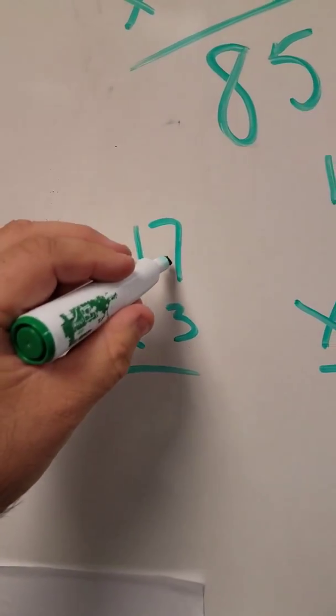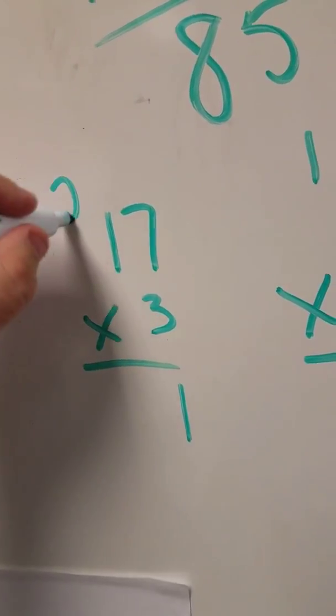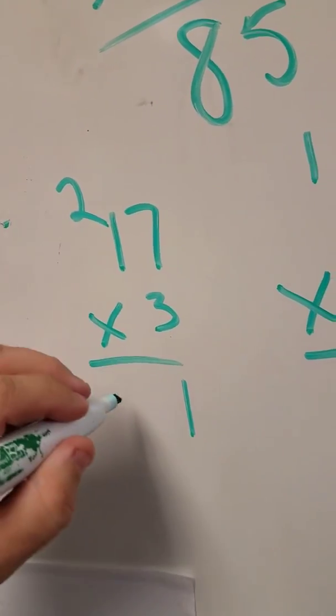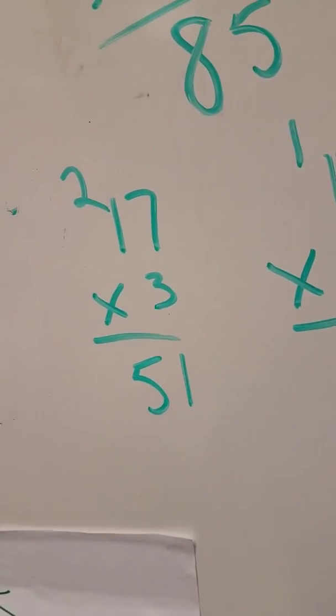17 times 3. 7 times 3 is 21. 3 times 1 is 3 plus 2 is 51. Hey, right. Right on the money.